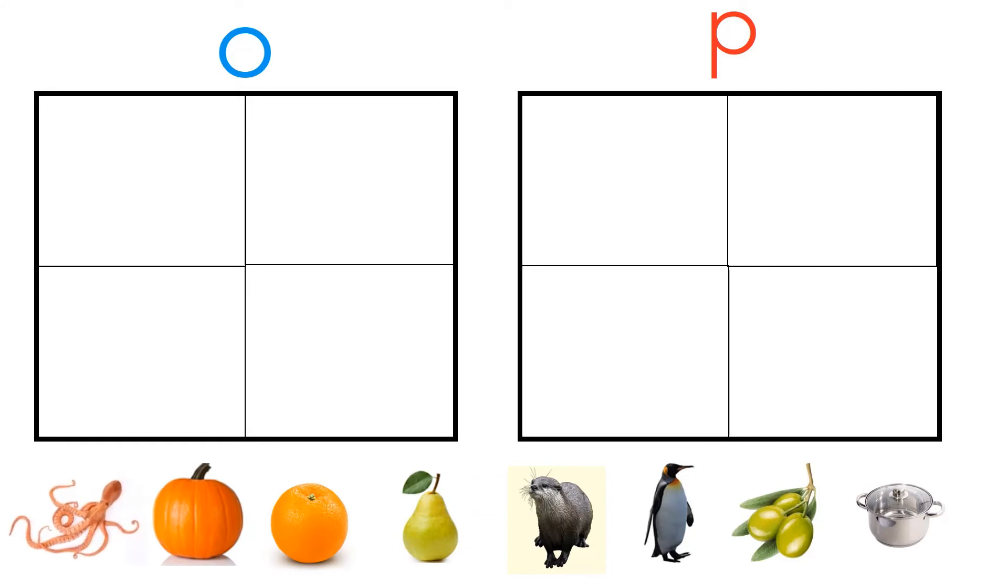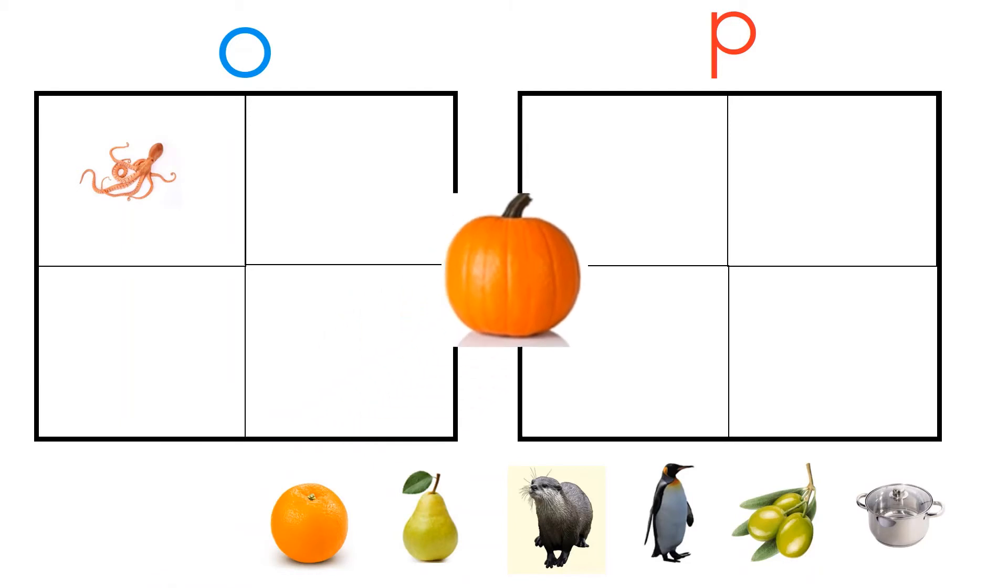O, octopus, octopus goes under O. Can you put picture of octopus under O? P, pumpkin, pumpkin, P goes under P. Put picture of pumpkin under P.